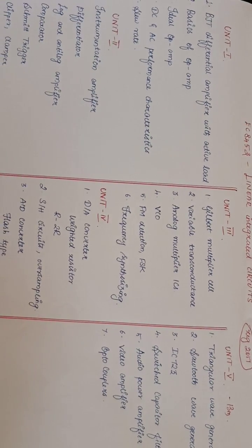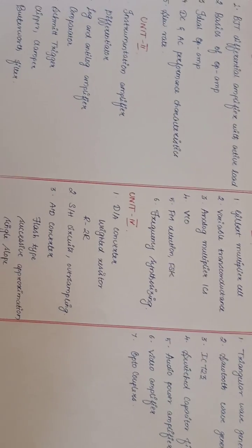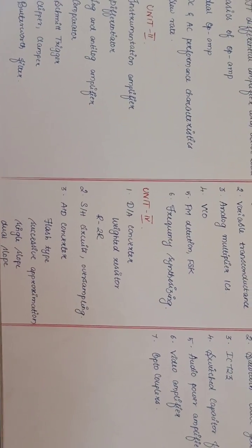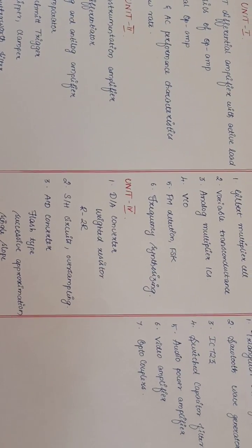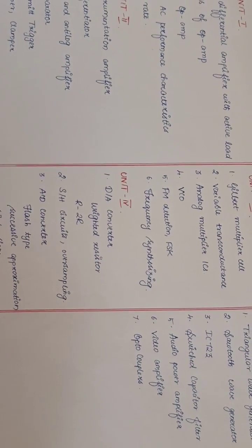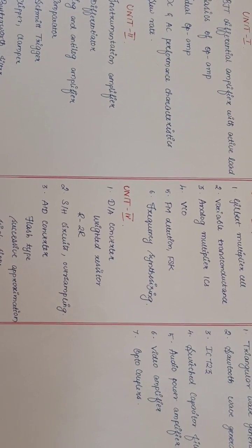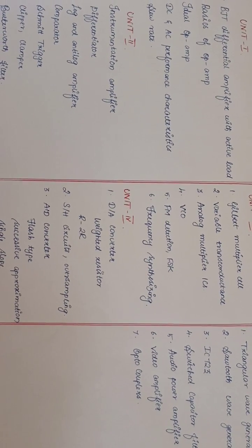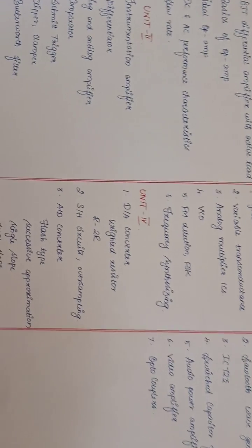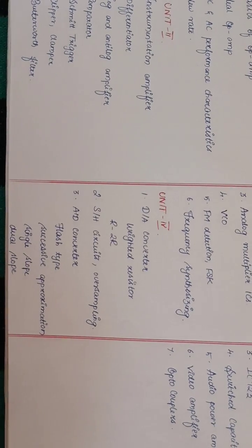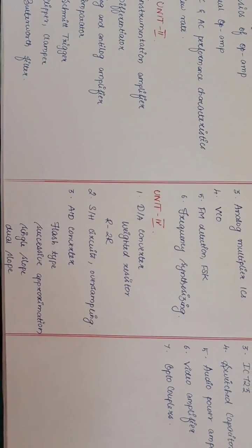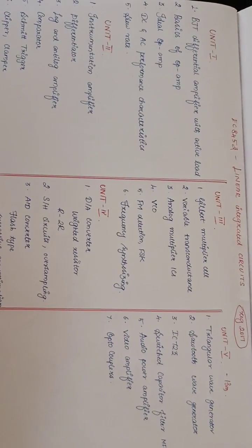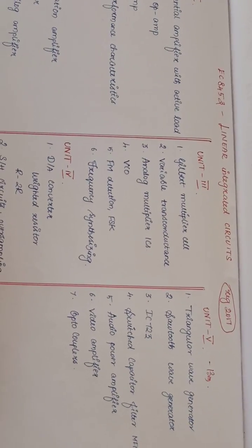In the 4th unit, the topics are Converters — Analog to Digital (A2D) and Digital to Analog (DA) Converters. There are 2 types: Weighted Resistor DAC and R-2R Ladder DAC. Next is the Sample and Hold circuit, Oversampling, A2D Converter types including Flash Type, Successive Approximation Type, Single Slope and Dual Slope.